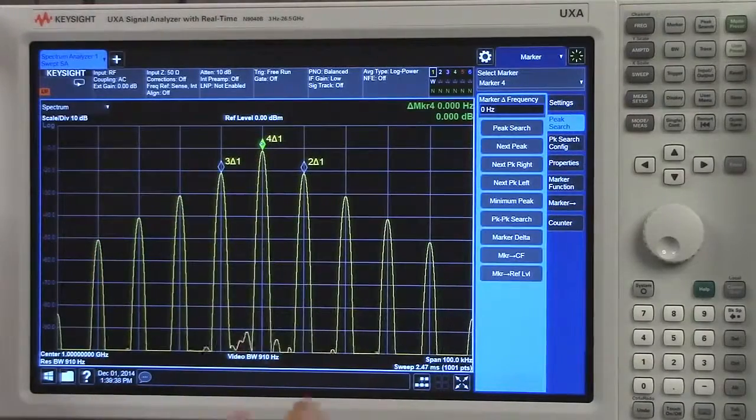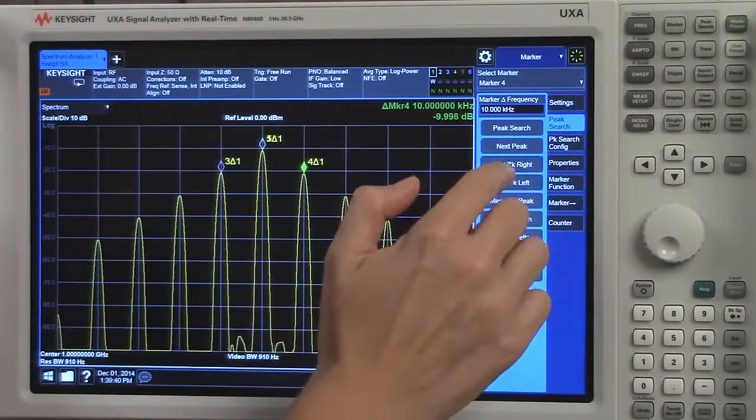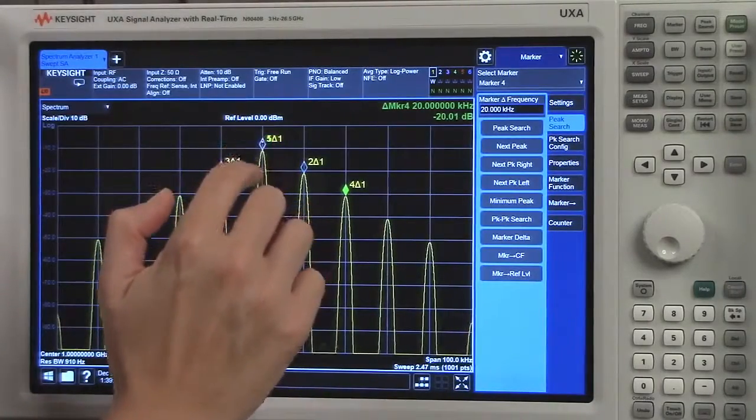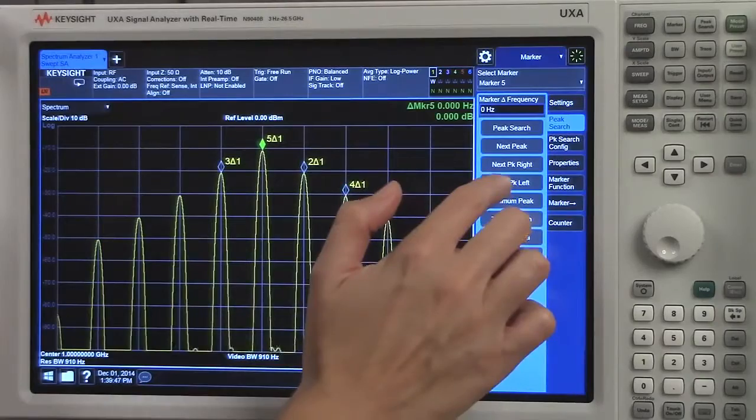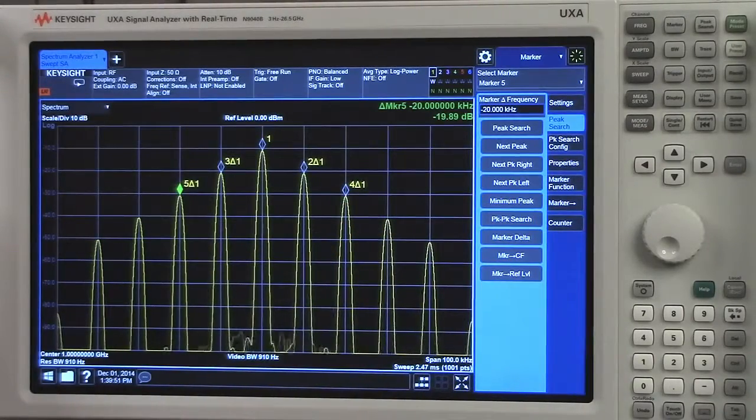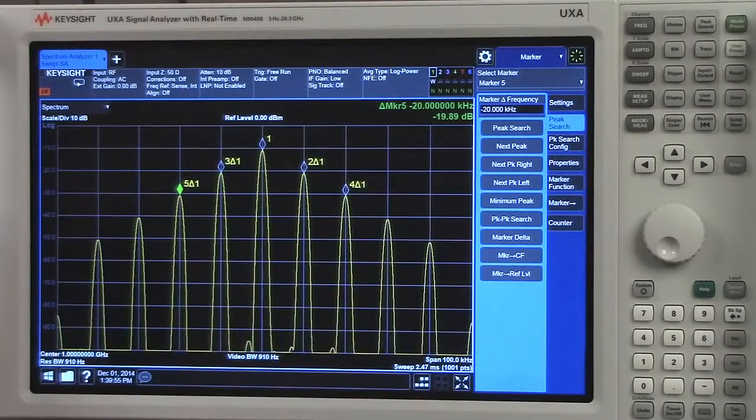And then marker four. I'll hit next peak right two times. And then finally, I'll select marker five. Next peak left two times. Now I have all of these markers positioned relative to marker one.